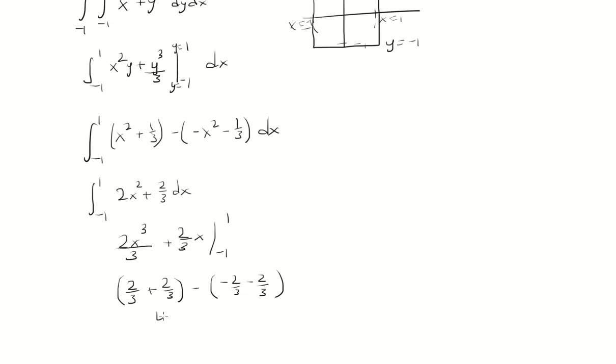So 2 thirds plus 2 thirds is 4 thirds. Minus negative 2 thirds minus negative 2 thirds is negative 4 thirds. We'll add these together and get 8 thirds as our volume.